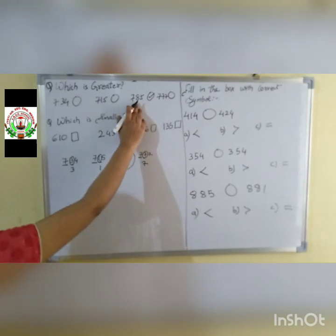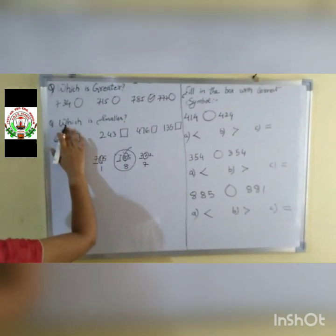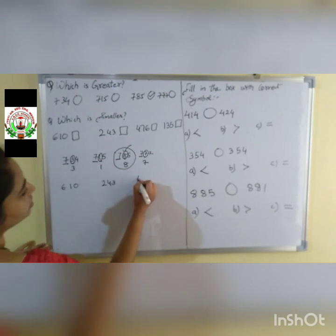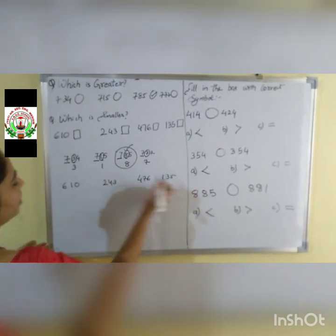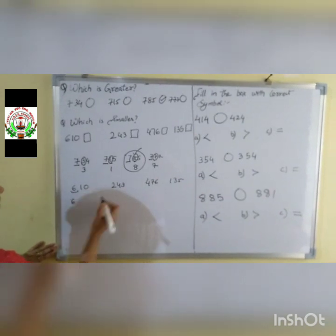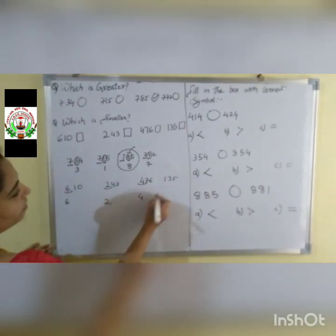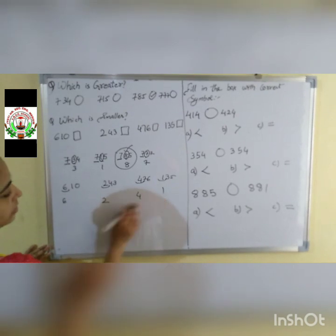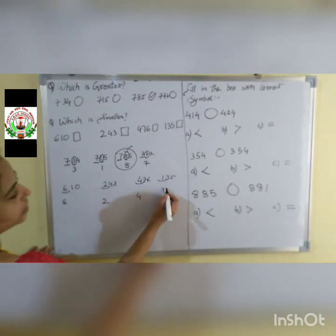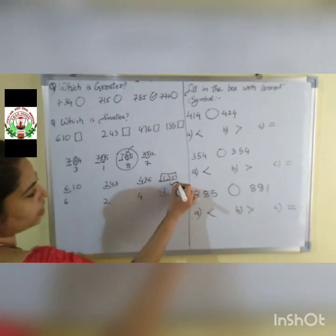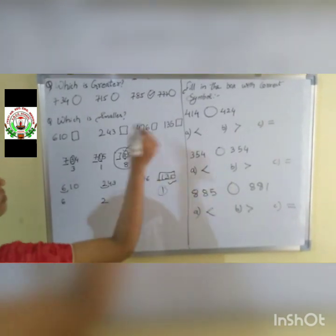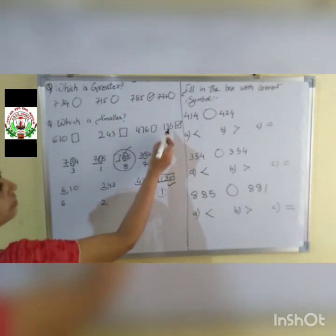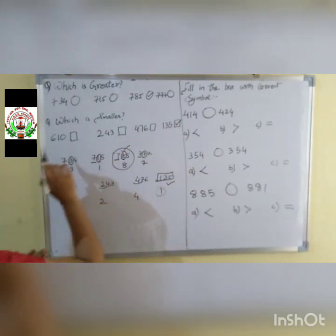Which is smaller? Write down the numbers on the rough side. Look at the first digit of each number: 6, 2, 4, 1. Among these, 1 is the smallest. So the whole number 135 is the smallest among the 4. Where is the option? Yes — 135. We put a tick mark there. 135 is the smallest number among the 4.